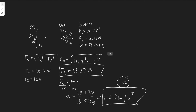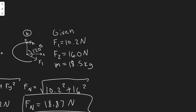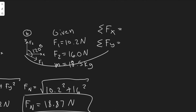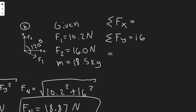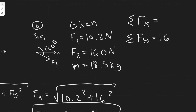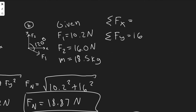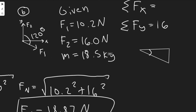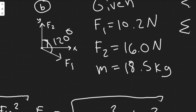F2 is along y so it has no x component. To break F1 into components, think of it like a triangle. The angle given is 120 degrees from the axis, and since 90 degrees is the right angle, the remaining angle inside the triangle is 30 degrees. So the angle we work with is 30 degrees, and the magnitude of F1 is 10.2 newtons.